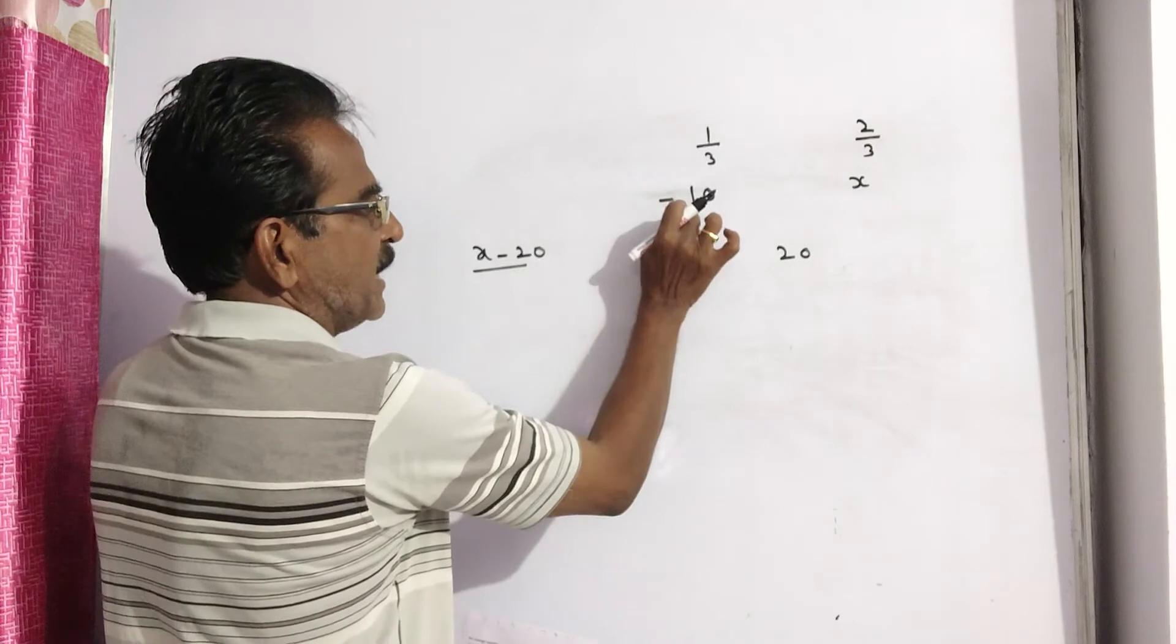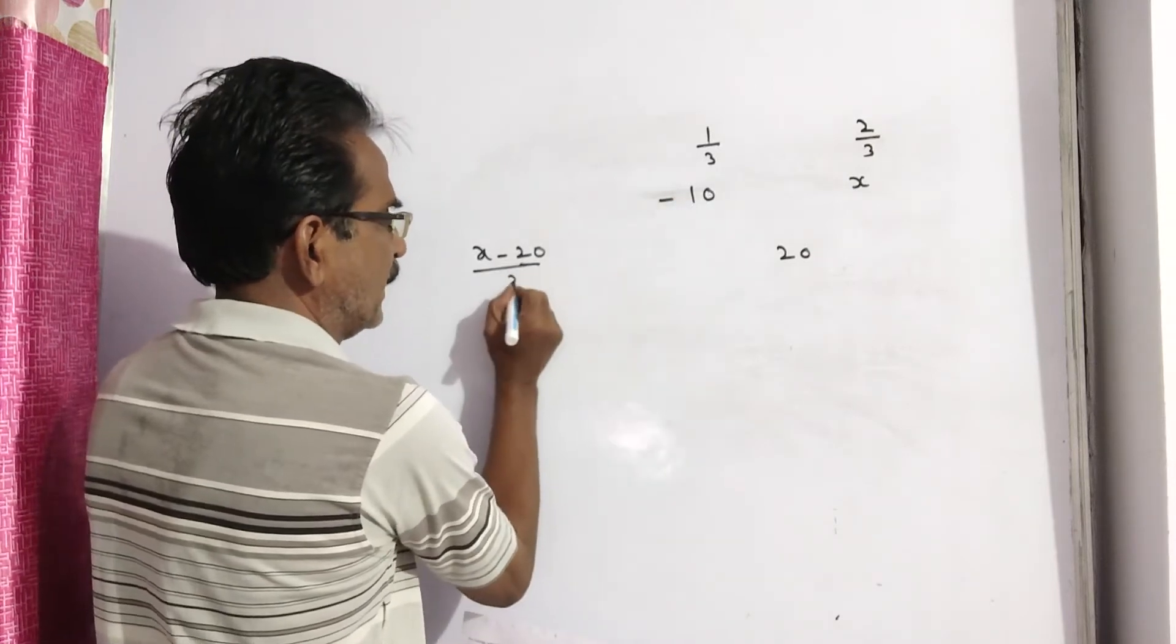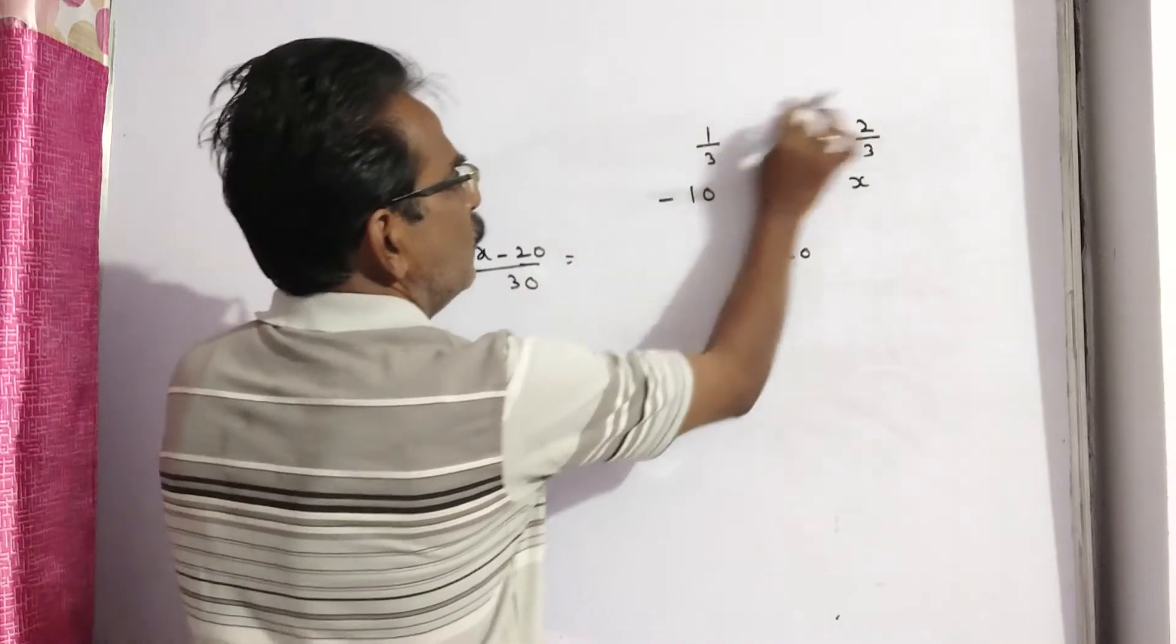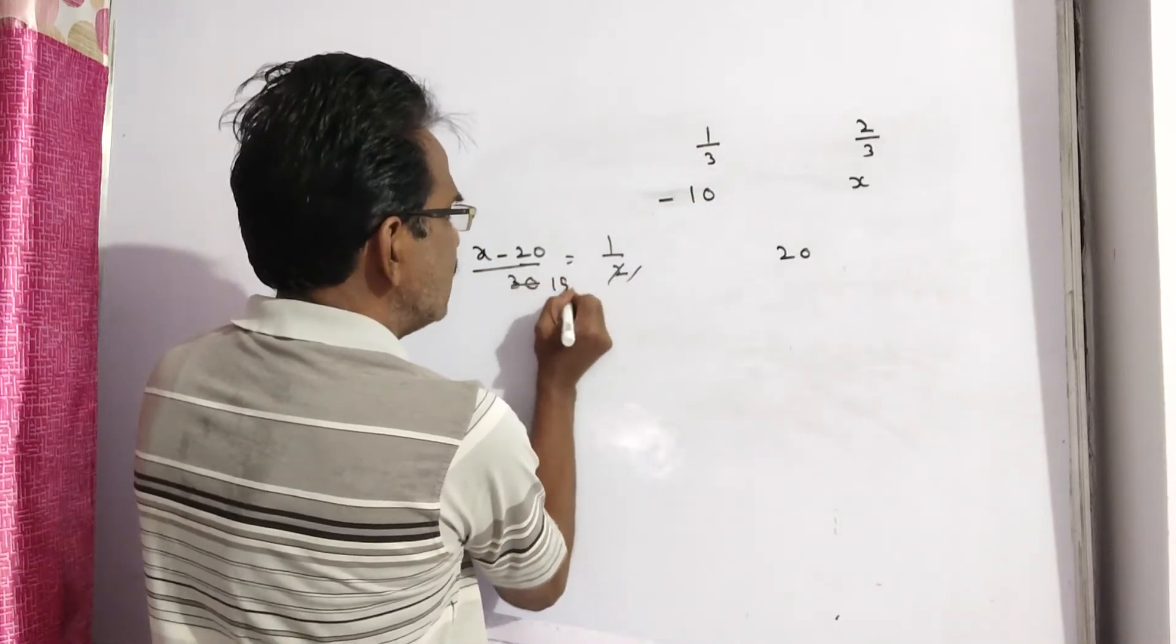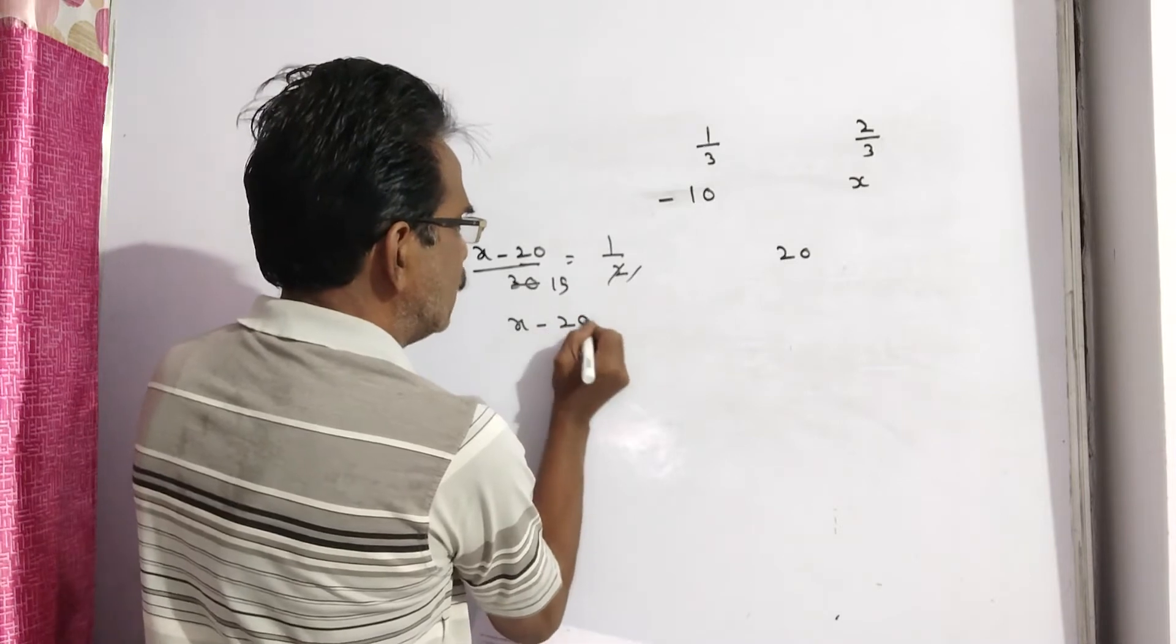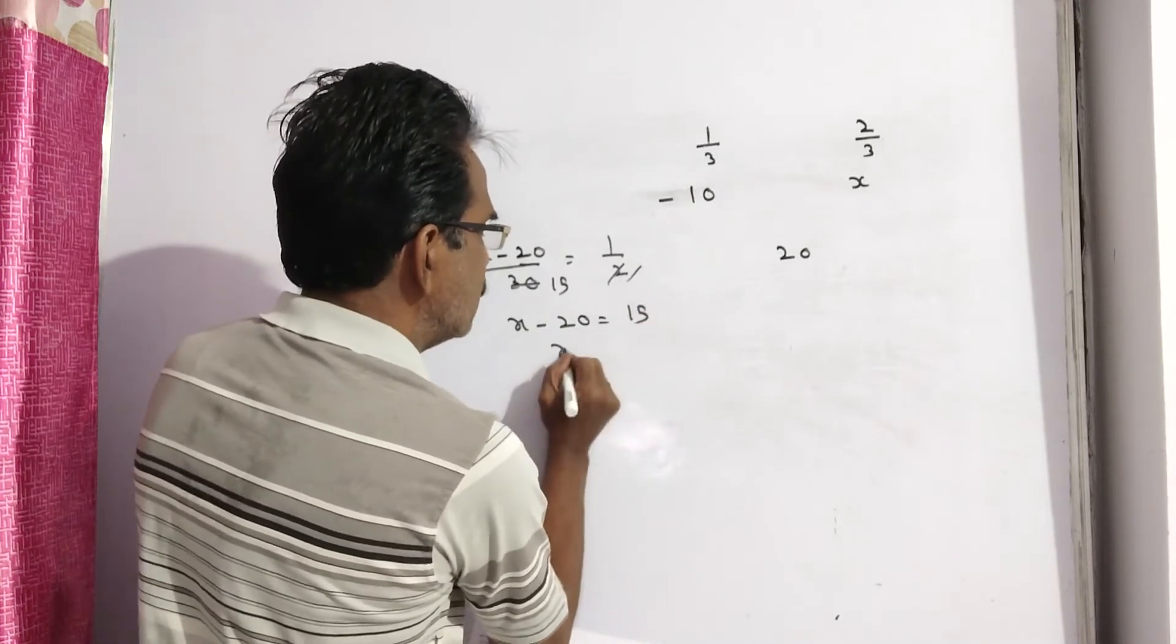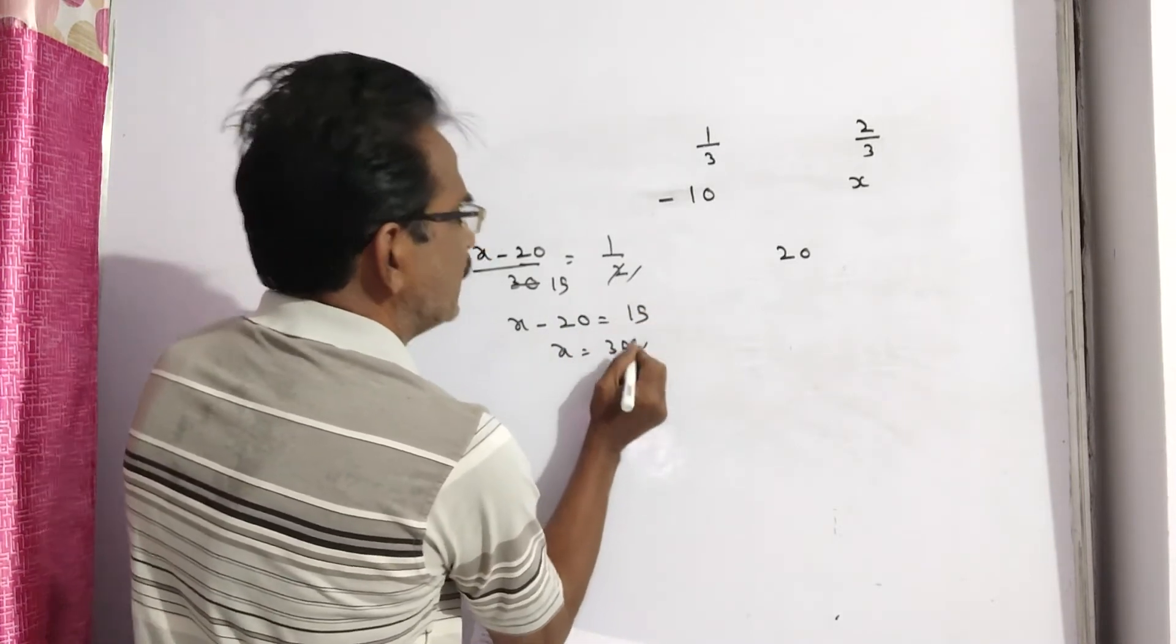by 20 minus minus 10, which is 20 plus 10, 30, is equal to 1 by 2. Cross multiplying, 2 times x minus 20 is equal to 30. So x minus 20 is equal to 15, x is equal to 35.